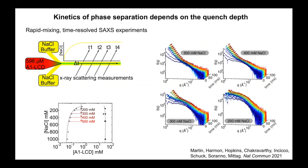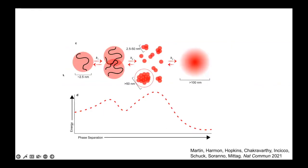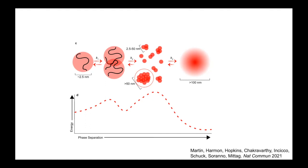The stronger the driving force for phase separation, the faster is nucleation and growth into the final condensates. The overall model: when we quench intrinsically disordered chains into the salty buffer where they phase separate, they contract and then start assembling. We saw that there is some barrier to assembly — the chains don't readily make these first assemblies, and only once we go above a certain nucleus size do we get facile assembly into droplets.